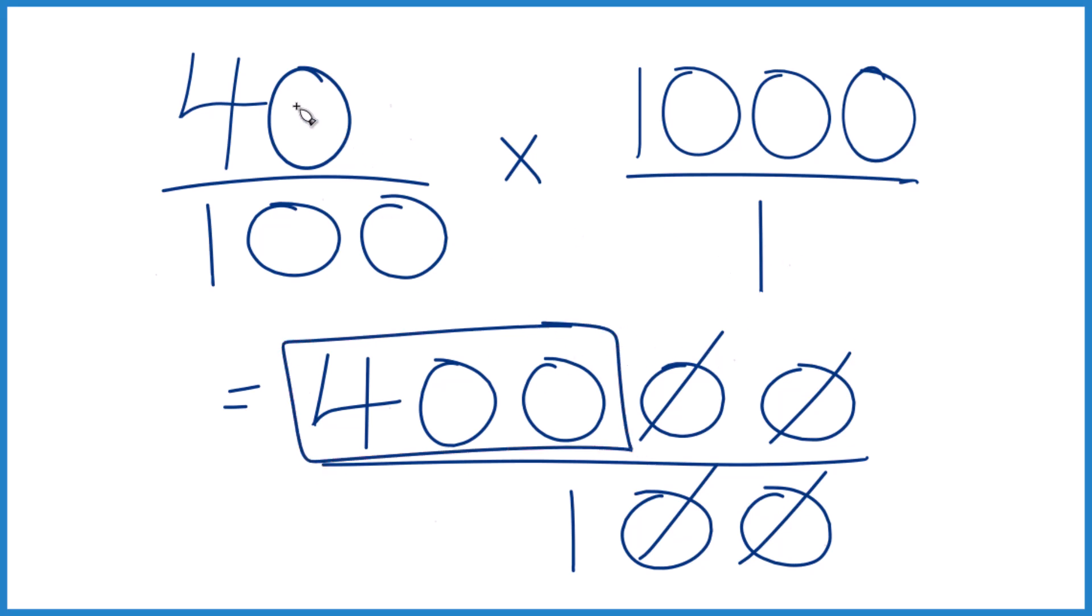One final way, you could take 40 divided by 100. That would give you 0.4, and multiply that by 1,000, and you get 400.